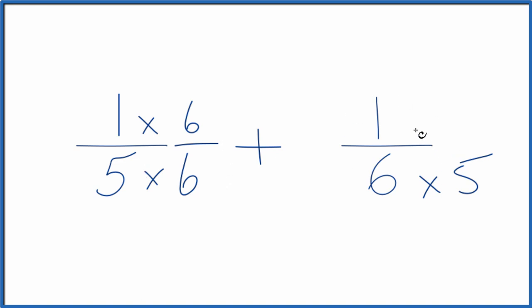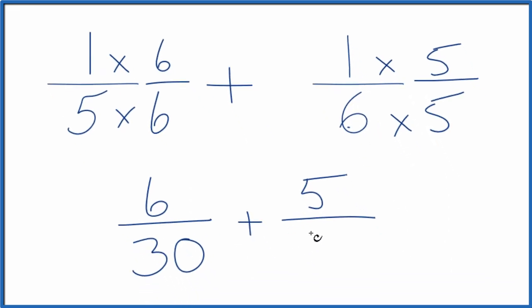Over here, let's multiply one times five, so we get five over five. And now, one times six, that's six. Five times six is thirty. Plus, we have one times five, that's five. Six times five is thirty.